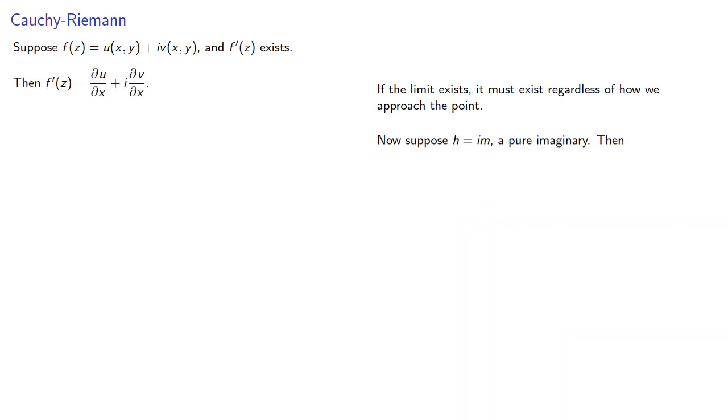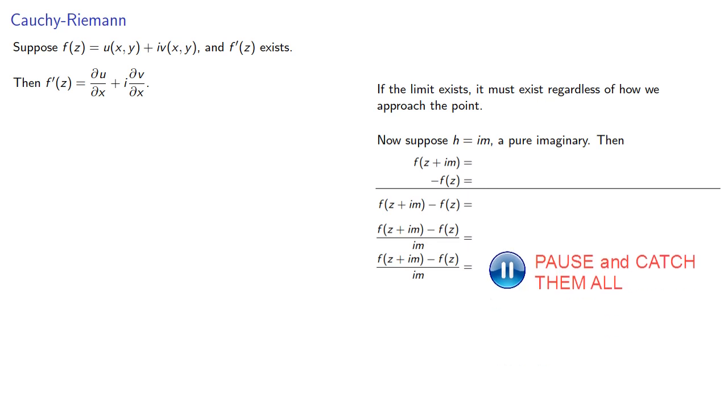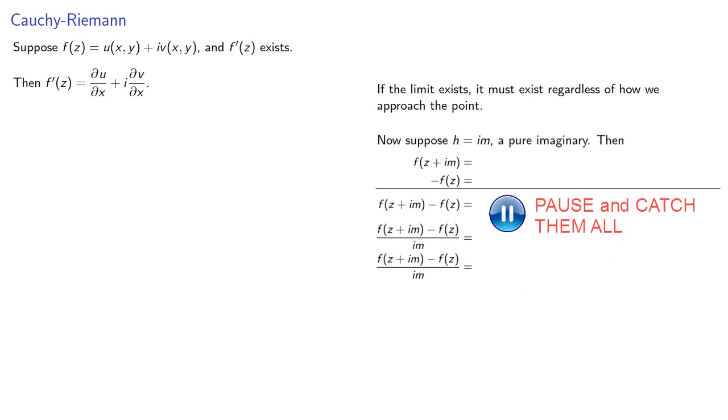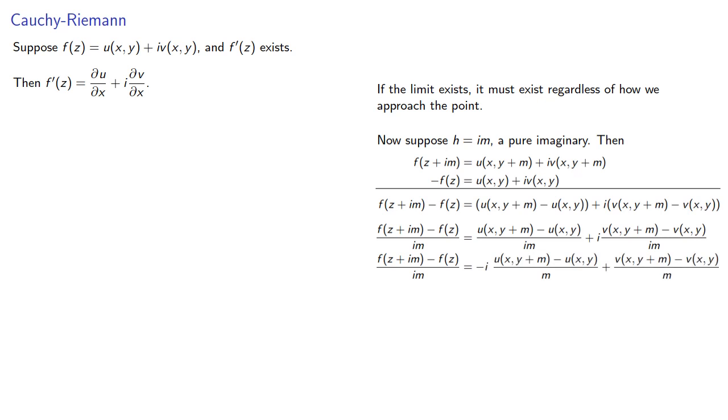Now suppose h is im, a pure imaginary number. Again, finding our difference quotient and taking our limit as m goes to 0, we're assuming the derivative exists so we still have f prime of z, and on the right-hand side we have our partial of u with respect to y and our partial of v with respect to y.